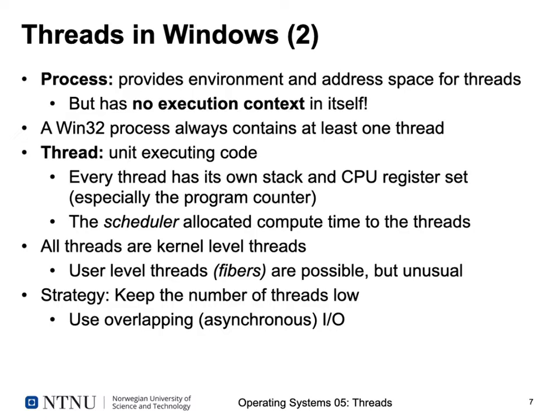The thread in Windows is the unit that executes code. Every thread has its own stack and CPU register set — especially the stack pointer and program counter. The scheduler in Windows allocates compute time to threads, and all threads in Windows are usually kernel-level threads scheduled by the kernel scheduler.